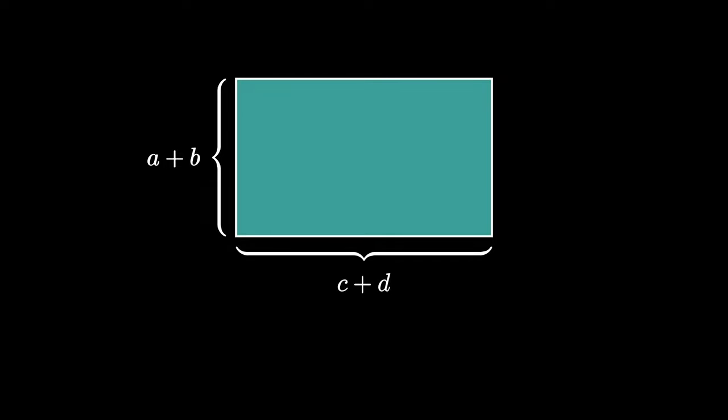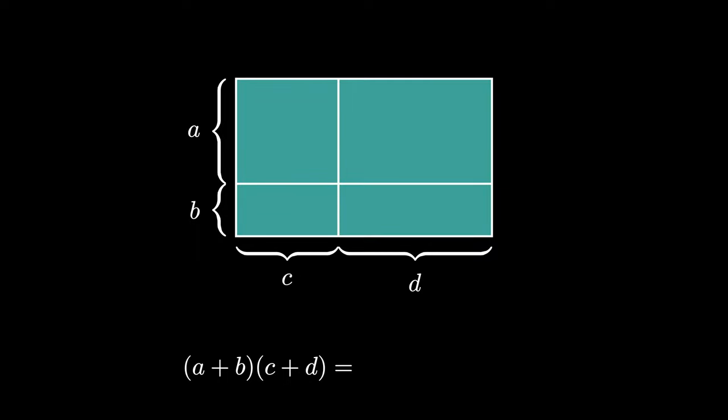To compute A plus B times C plus D, we are computing the area of an A plus B by C plus D rectangle, as pictured here. On the other hand, we can compute the area of this rectangle by dividing the side lengths into their corresponding pieces. So we can split the width into segments of length A and B, and we can split the length into segments of length C and D.